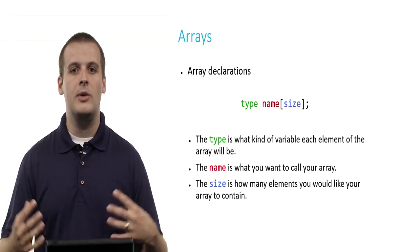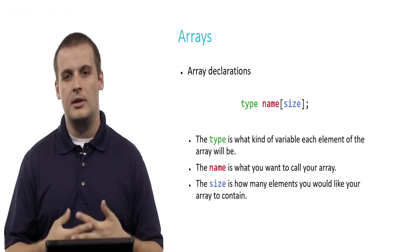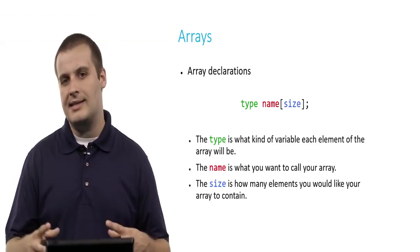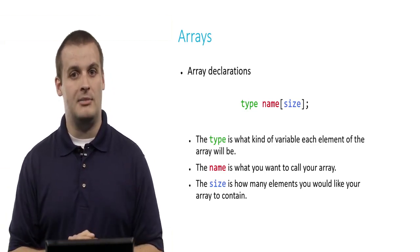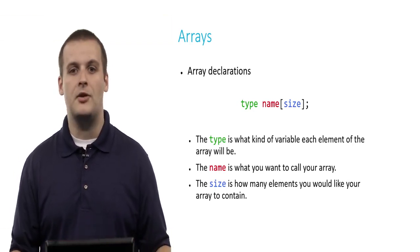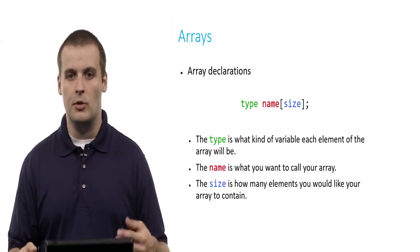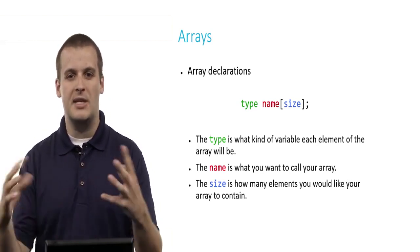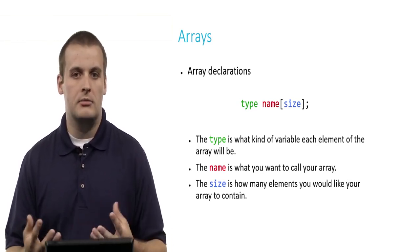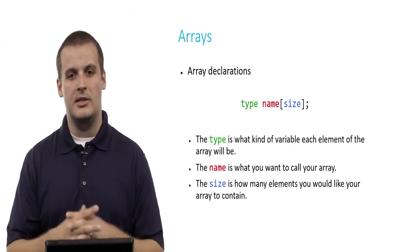What does an array declaration look like? There are three parts to an array declaration: a type, a name, and a size. This is very similar to a variable declaration, which is just a type and a name. The size element is the special case for an array because we are getting a bunch of them at the same time. The type is what kind of variable you want each element of the array to be. The name is what you want to call your array. Lastly, size, which goes inside of square brackets, is how many elements you would like your array to contain.